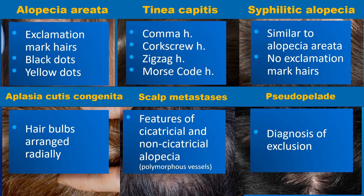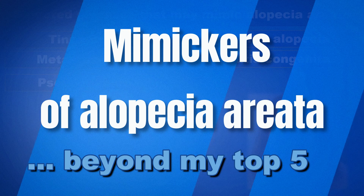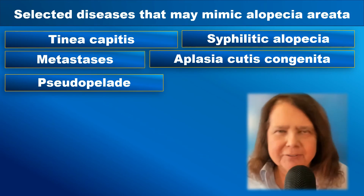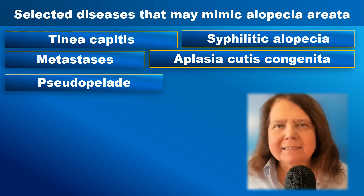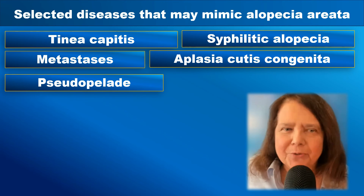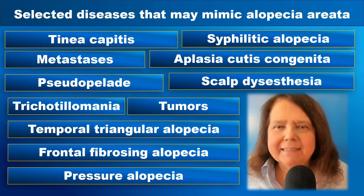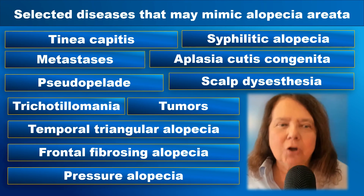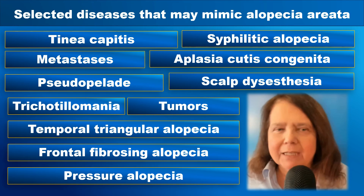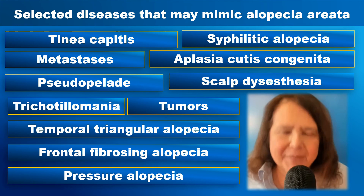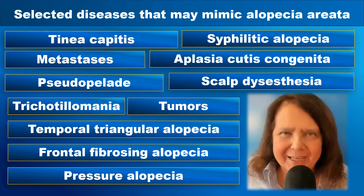However, pseudopelade is a diagnosis of exclusion, though sometimes it may show some features of lichen planopilaris in trichoscopy. This was only a selection of diseases that may mimic alopecia areata — there are several other diseases that may cause focal alopecia and mimic alopecia areata.